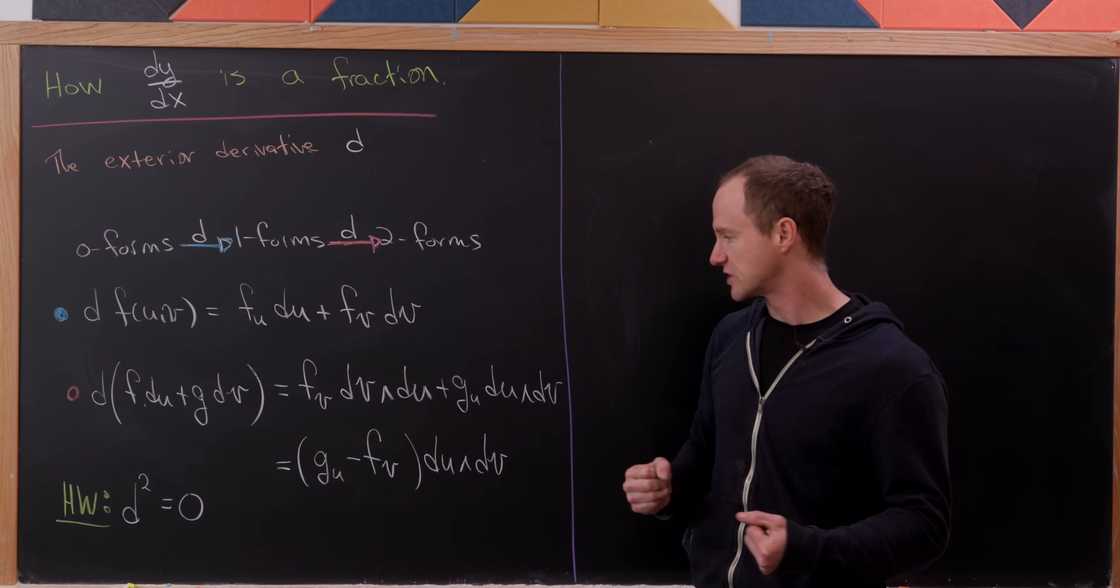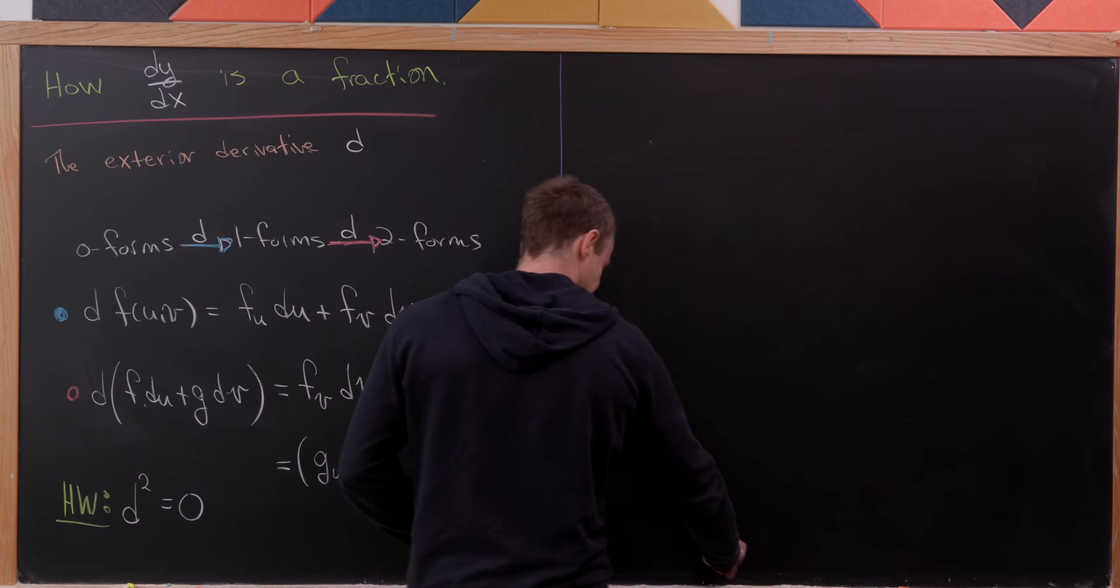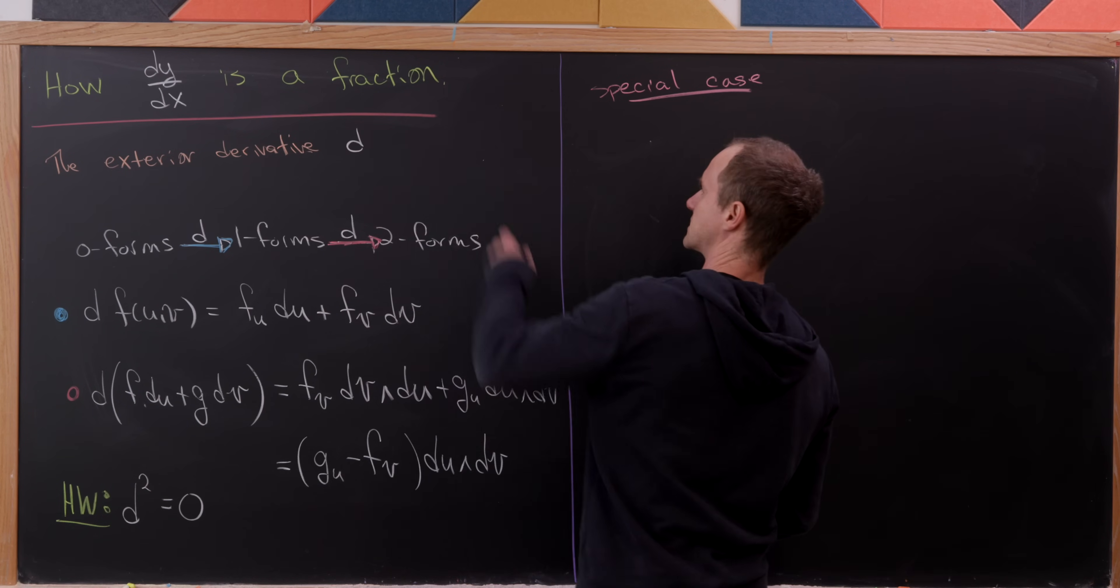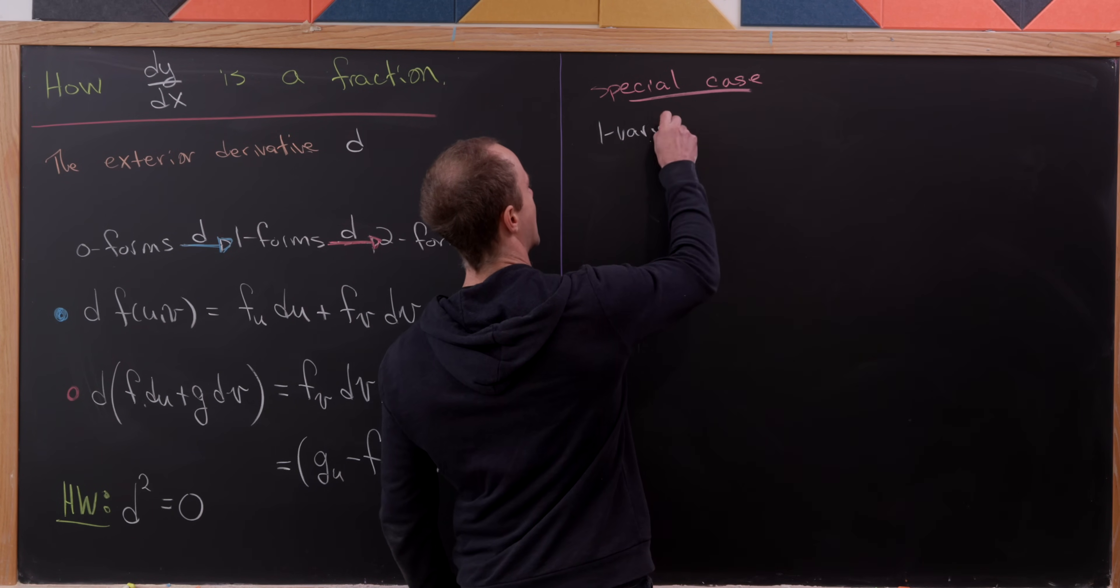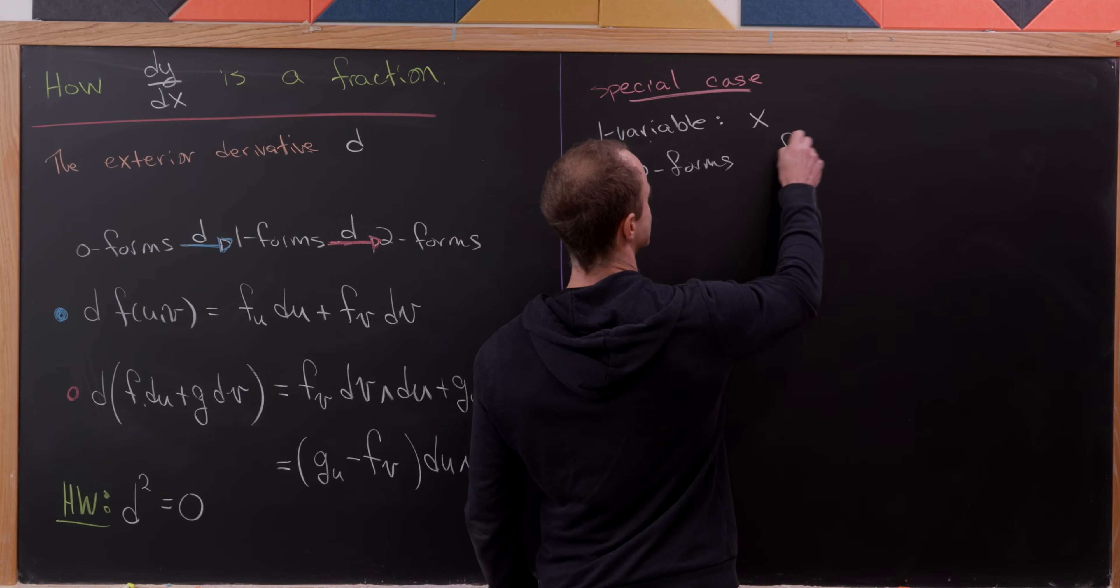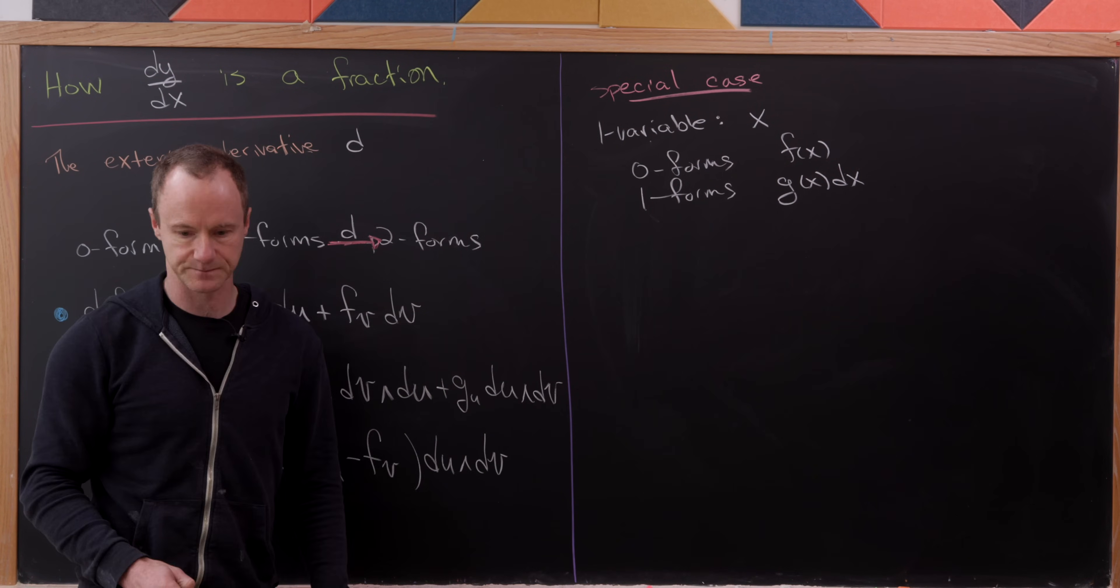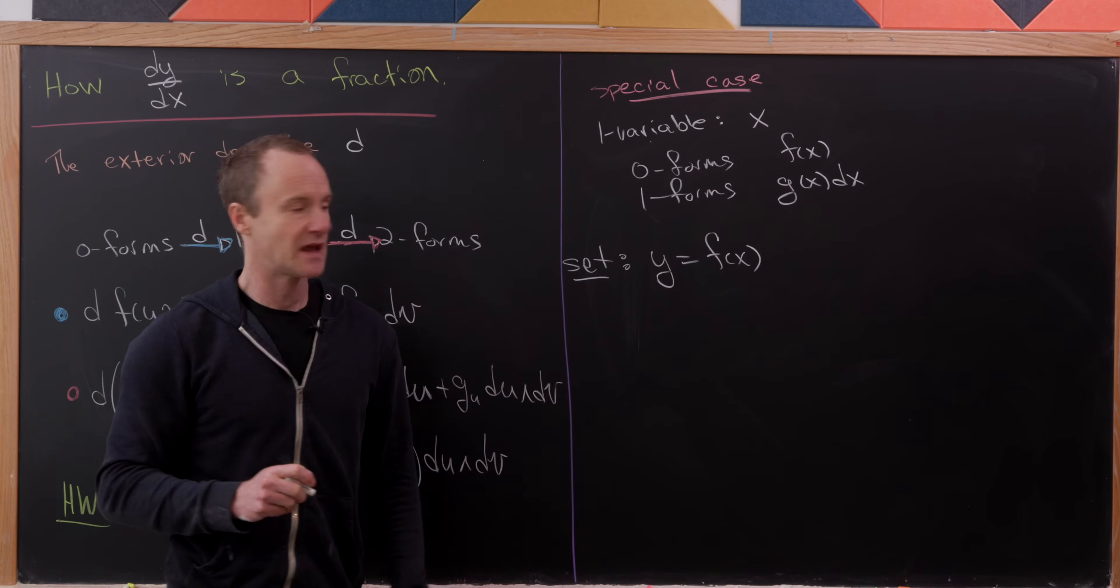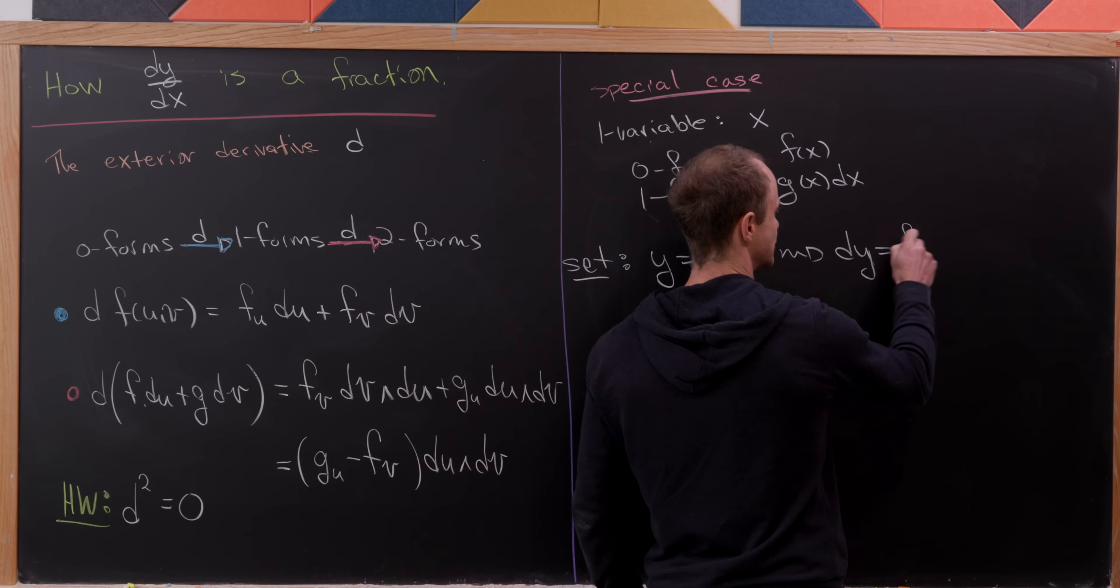So now we're actually finally ready to see our original question or our original goal here. So let's look at a special case. And that special case will be the case where we have only one variable. Because we really want to answer this question or look at this idea, specifically. So we've got one variable. And we'll say that that variable is x. But that means that we have zero forms, which just looks like functions of x. And then we have one forms, which looks like functions of x dx. But now we'll do the following. So let's set y equal to f of x. And let's observe doing the exterior derivative of y, which we might just write dy. That's going to be equal to f prime of x dx.